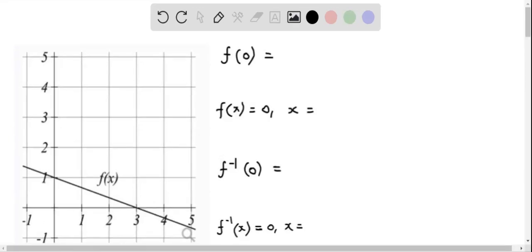Now find each of these values. The first one is f of 0, that is when x equals 0, we have to determine the corresponding function values.